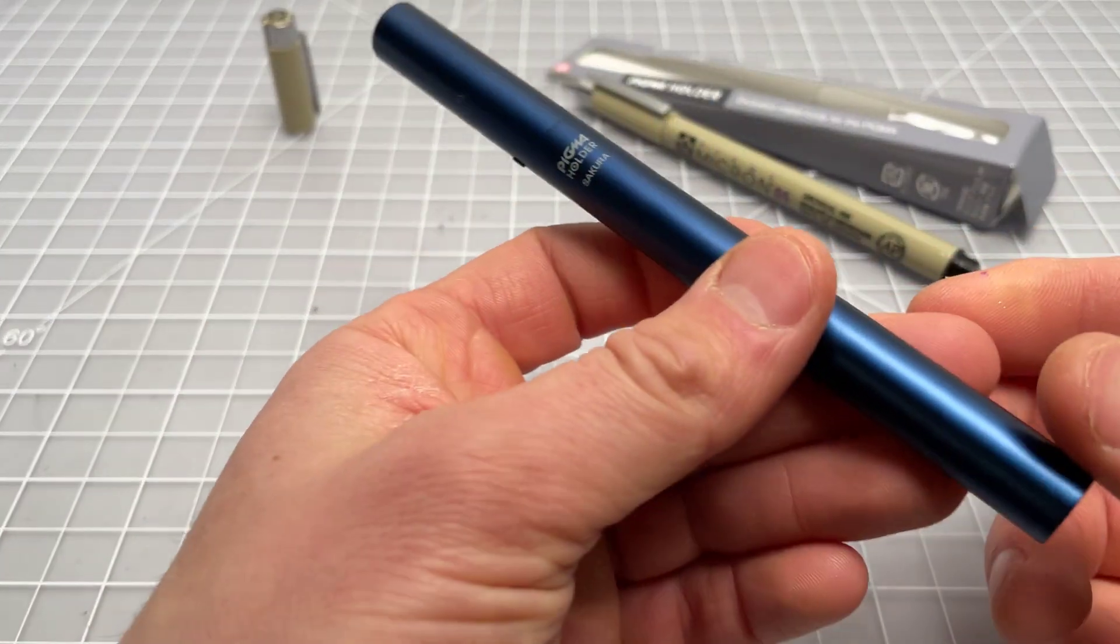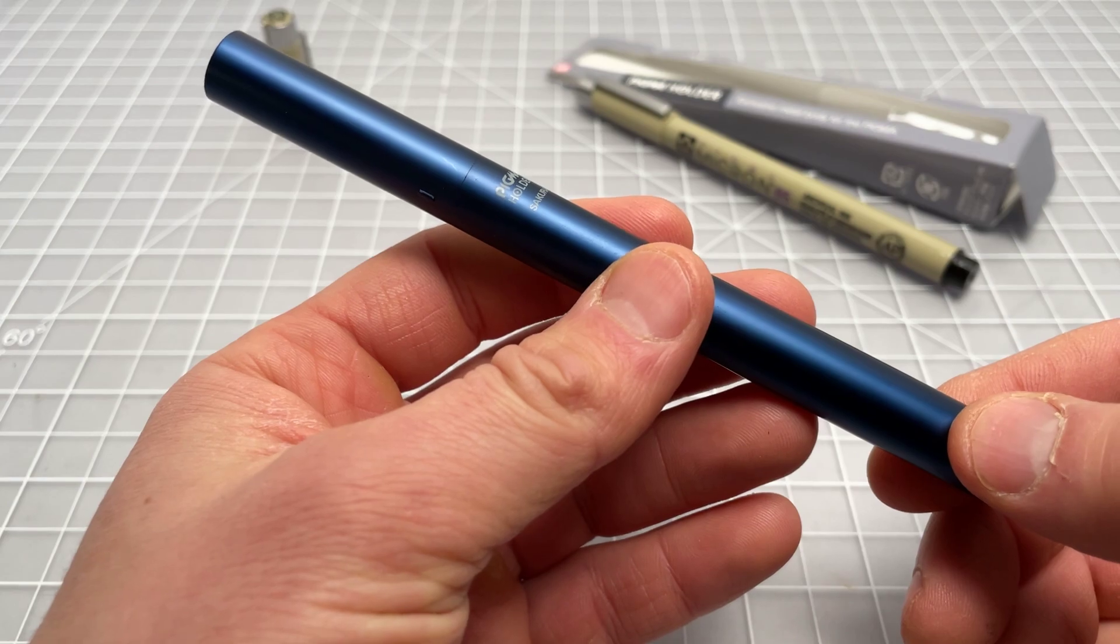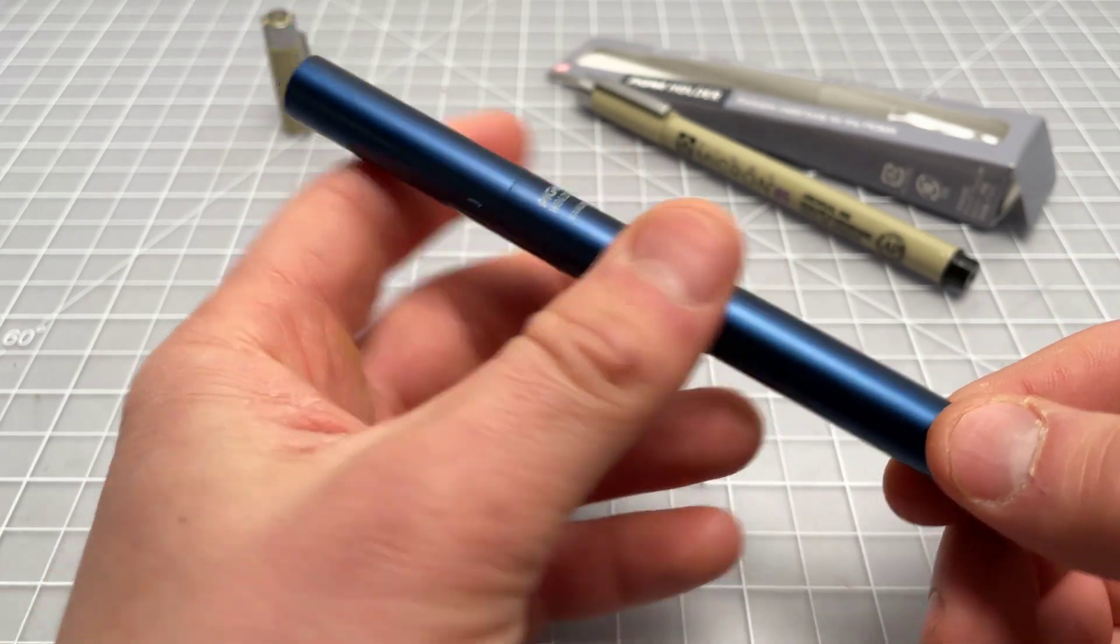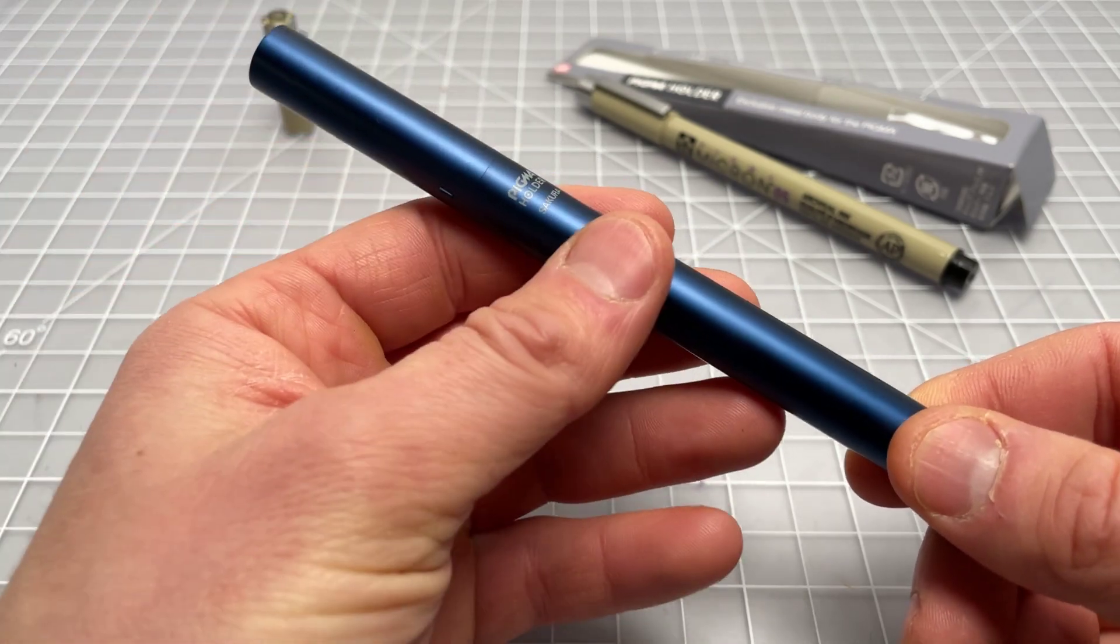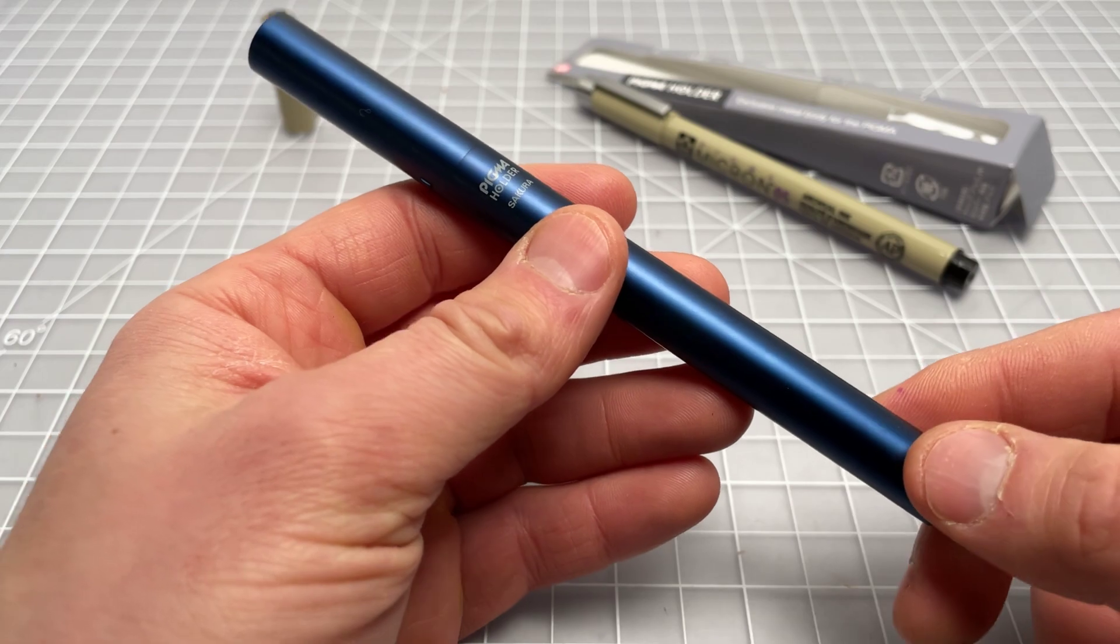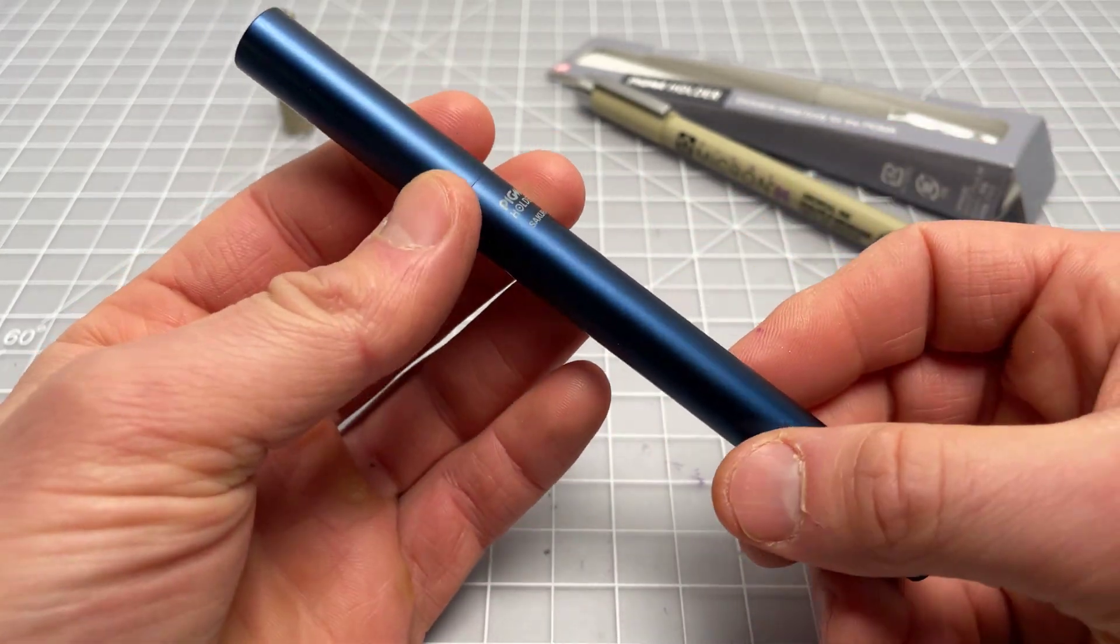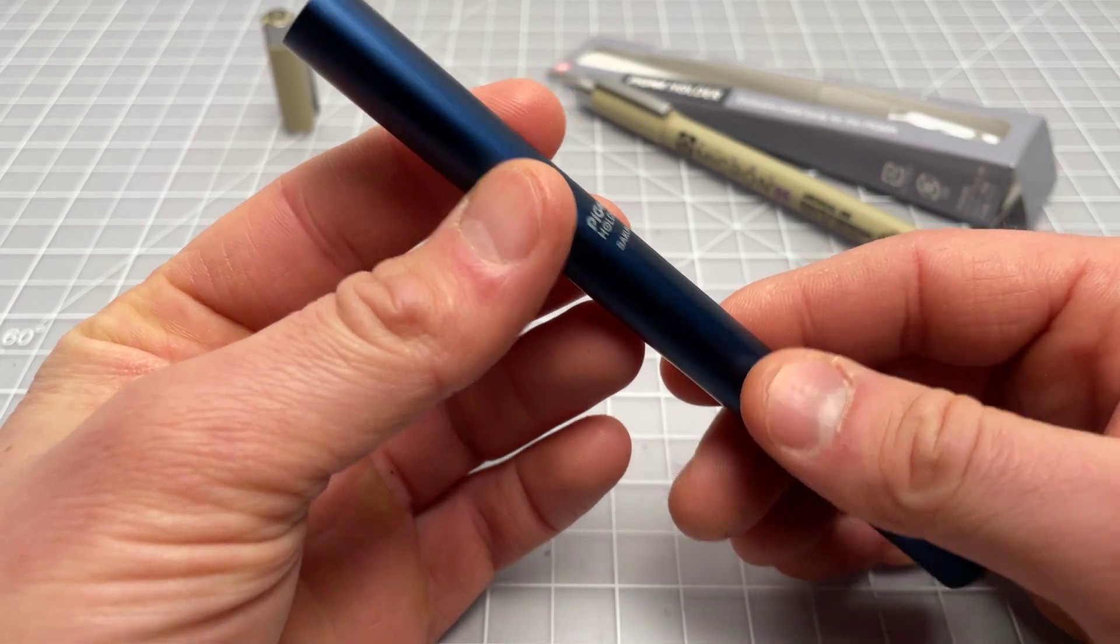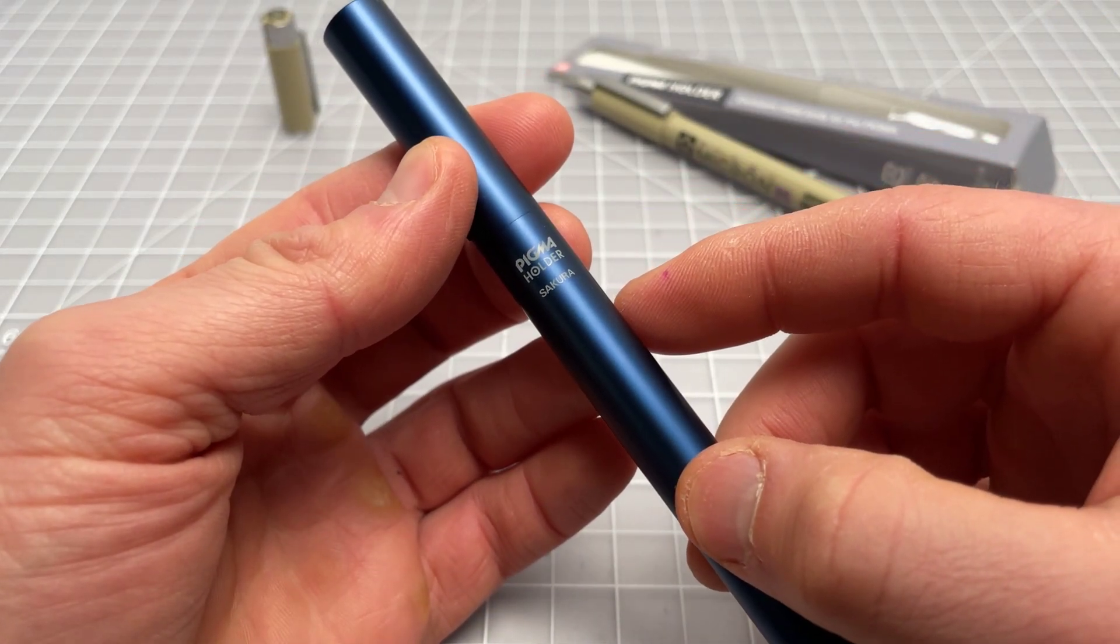It is called the Pigma Micron Holder. Not a super creative name, but it's a fun tool. What it is, it's a metal shell or case. I wouldn't really call it a case, but you use it with this on. So it is really a holder for the Pigma Micron. It's all aluminum, I think. It's hard to tell exactly what metal, but all metal. It comes from Sakura. It's not made by a third party.